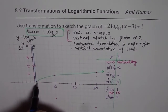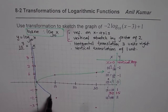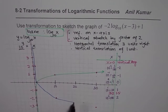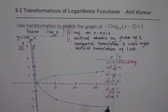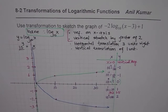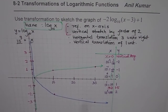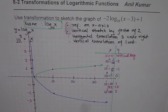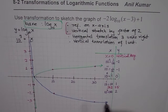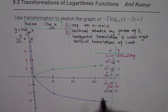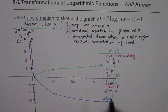Adding these transformed points to our graph, we get the graph of minus 2 log to the base 10 of x. The vertical asymptote is still at x equals 0, and the shape has been reflected and stretched vertically.